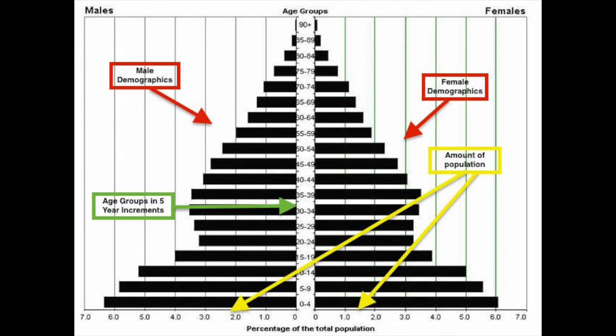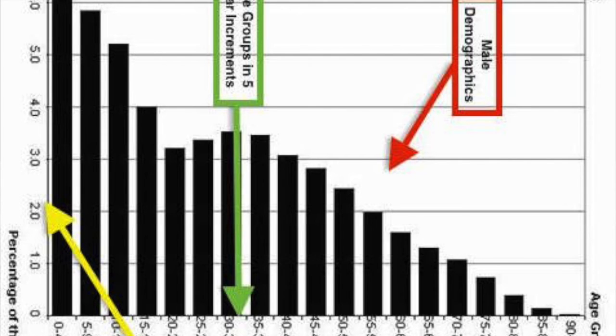That takes us to population pyramids. Population pyramids are all set up the same way: population is always across the bottom, either by percentage or in millions. Down the middle of the diagram are age groups, always in increments of five — 0 to 4, 5 to 9, 10 to 14, and so on. Males are always on the left, females always on the right. If the age-sex diagram is confusing, just cover half of it and you'll see it's just a bar graph comparing how many females and males are in each age group, and how many total in each age group.